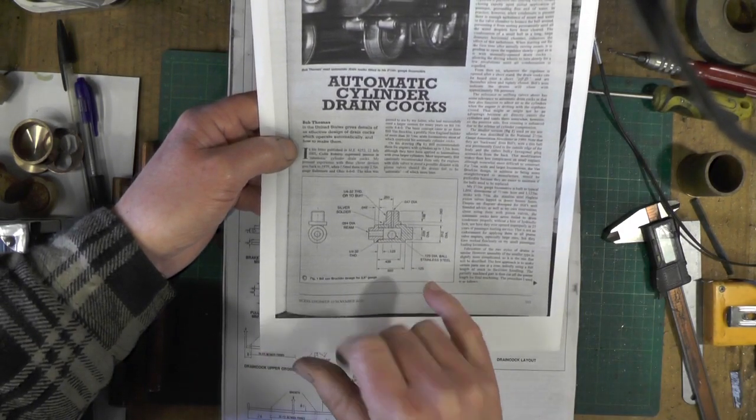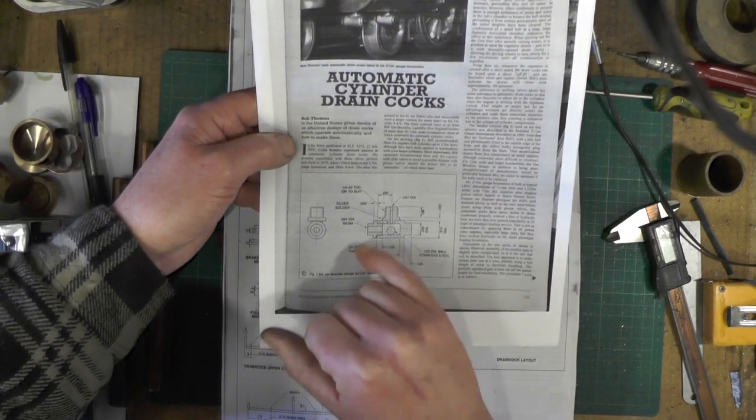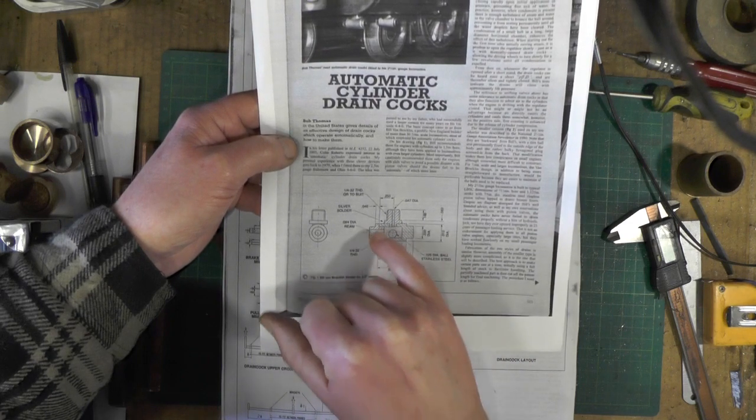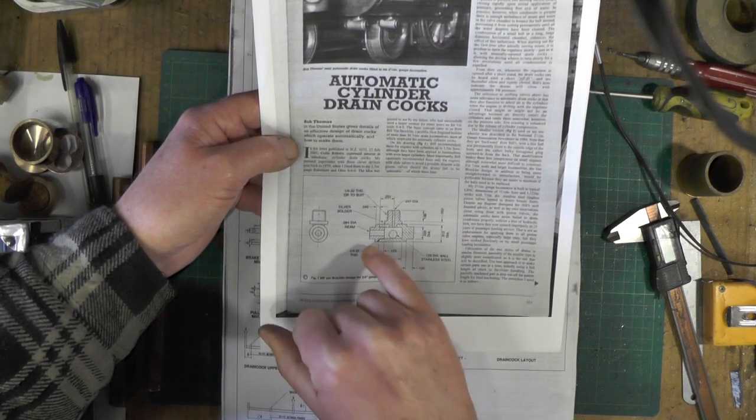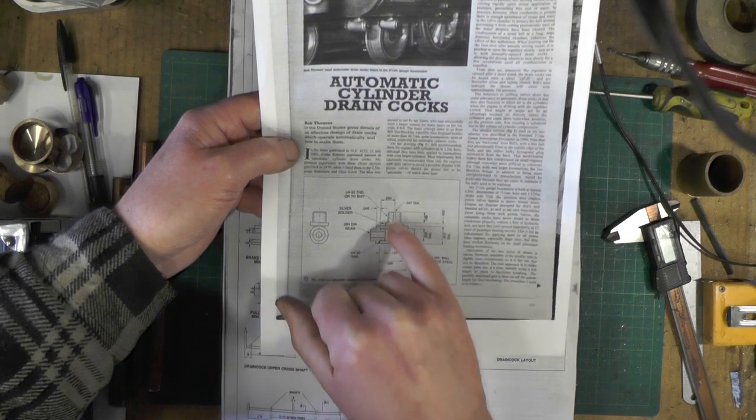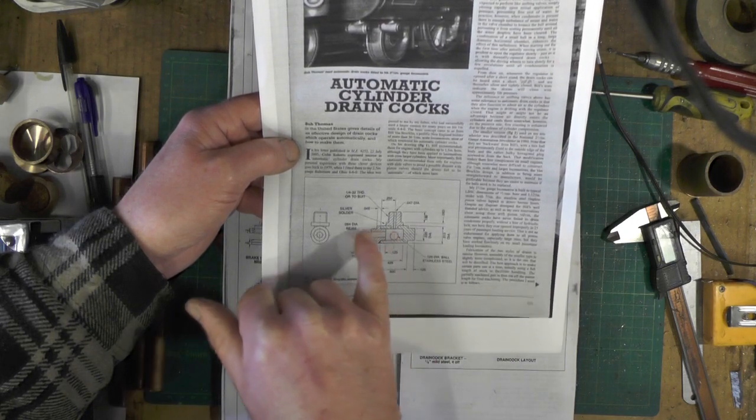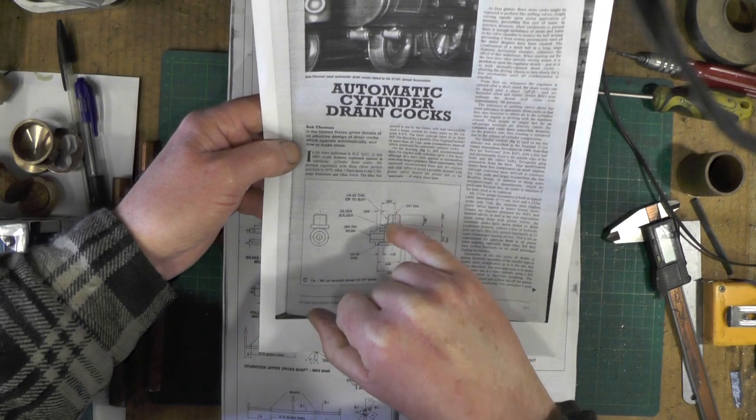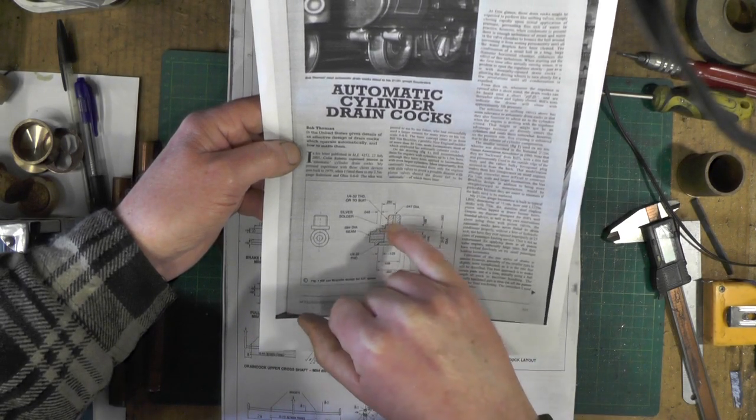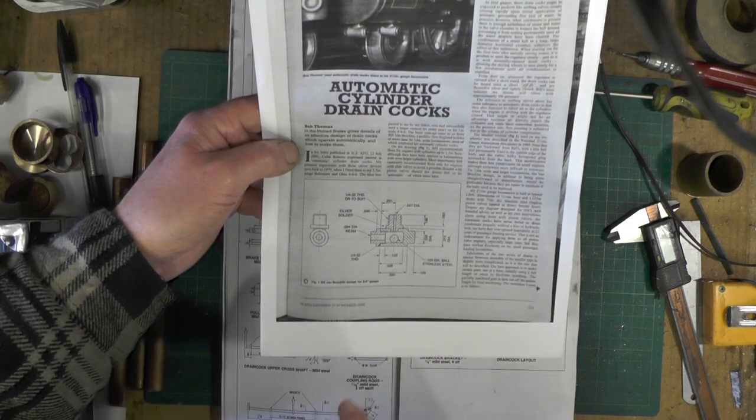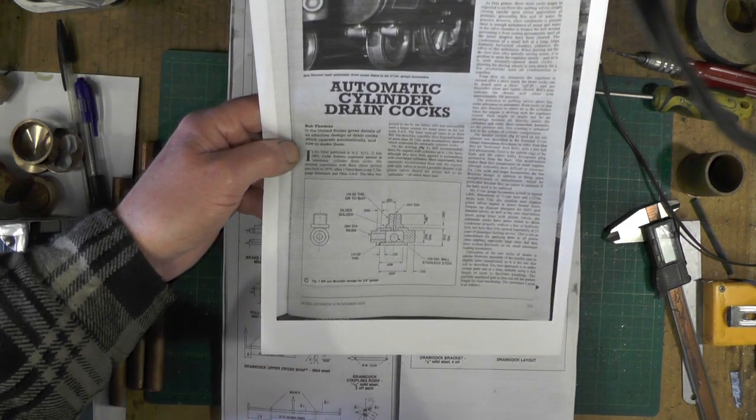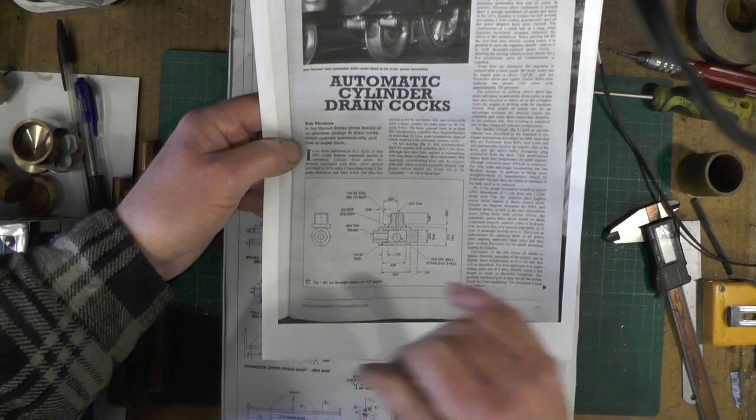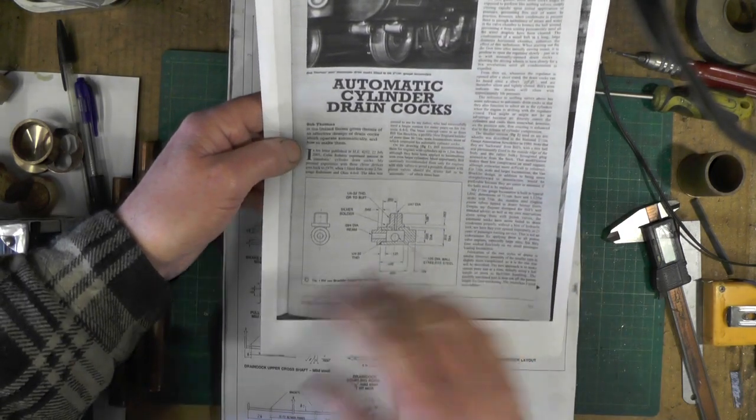Each drain cock consists of four pieces: the body, the plug in the end, the part that fits into the cylinders that's silver soldered in, and then there's a stainless steel ball inside that. I'm going to go over to the lathe now to get these made up.